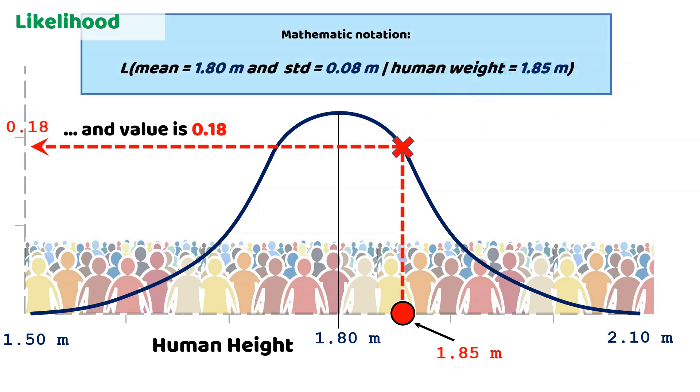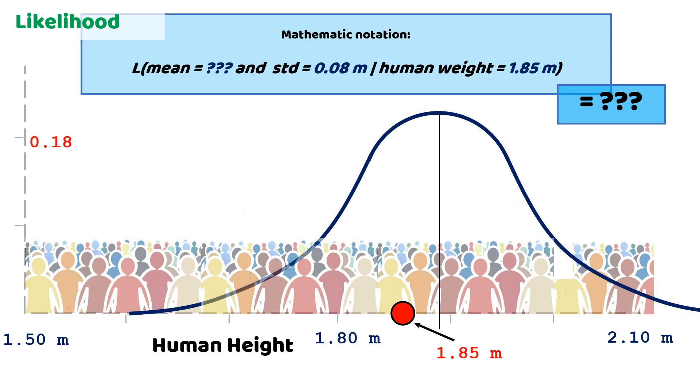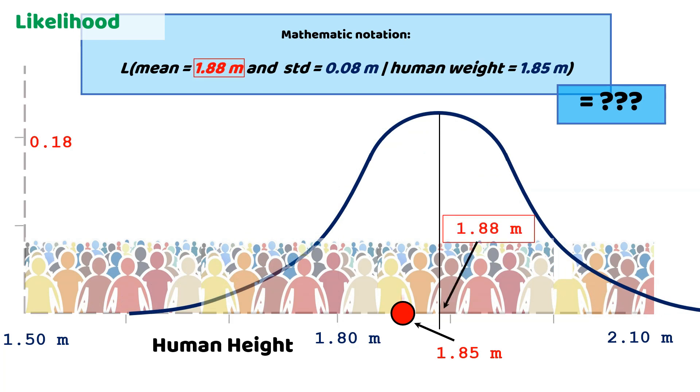Mathematically, we express this with the following notation: the likelihood of a distribution with mean equal to 1.80 meters of height and standard deviation equal to 8 centimeters, given we selected a human with height of 1.85 meters, equals 0.18. Let's shift the distribution over so that the mean gets a value of 1.88 meters. The new likelihood will be 0.23.